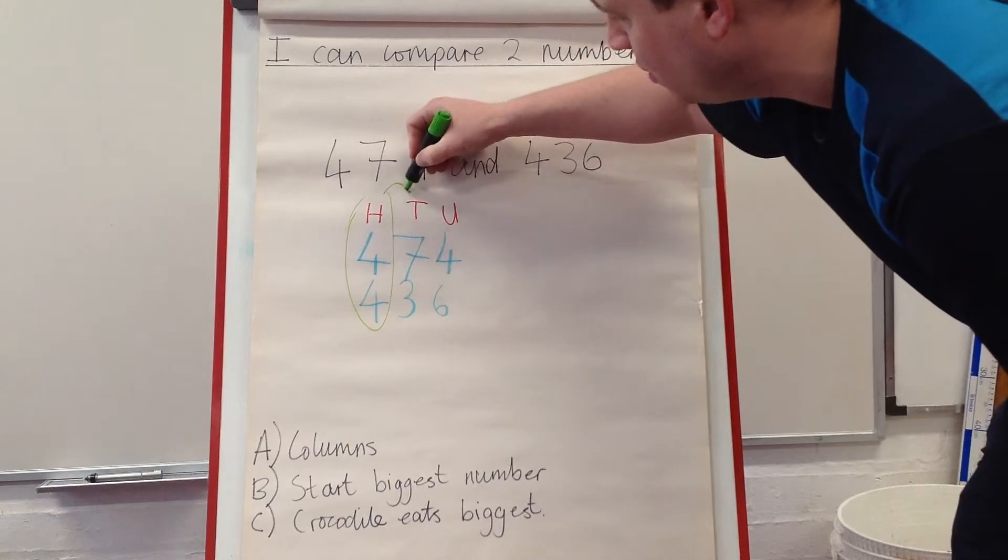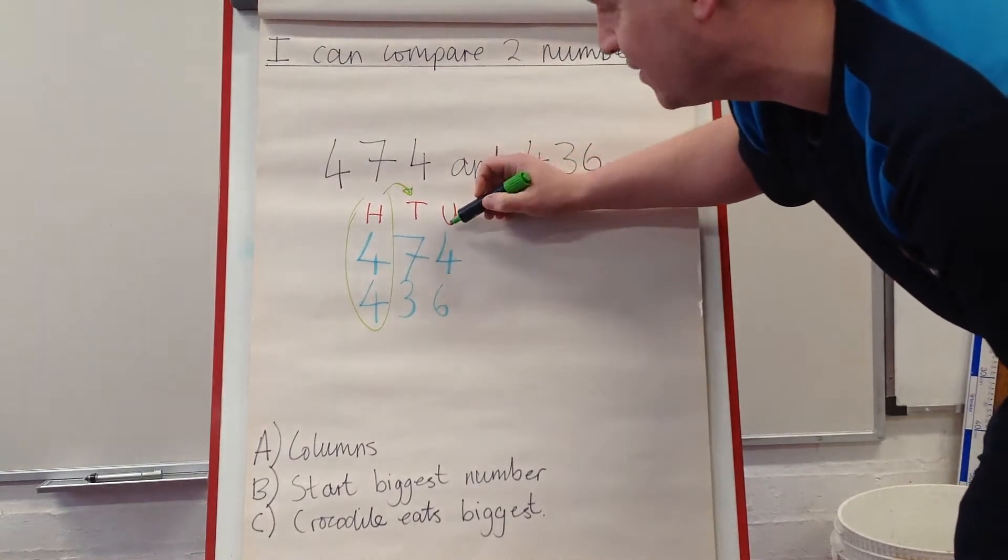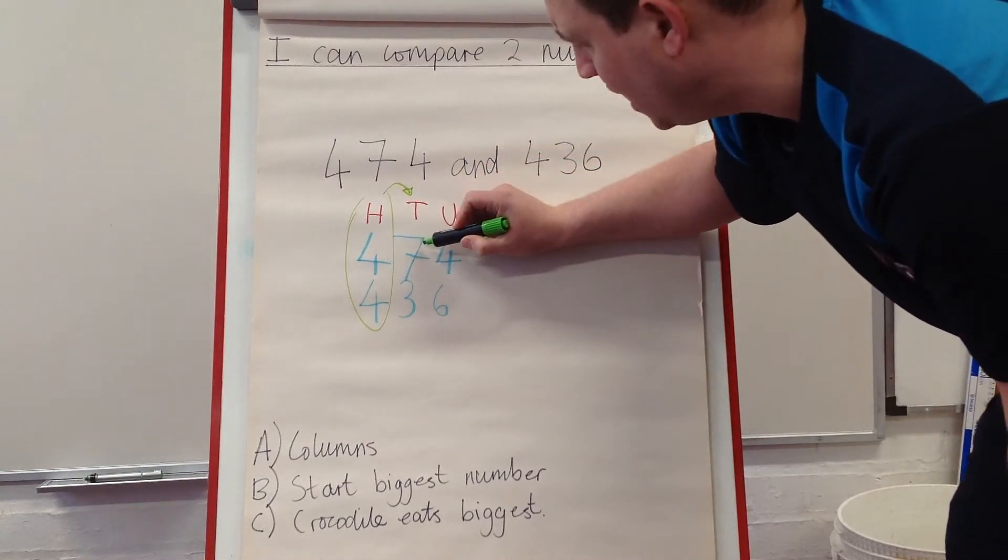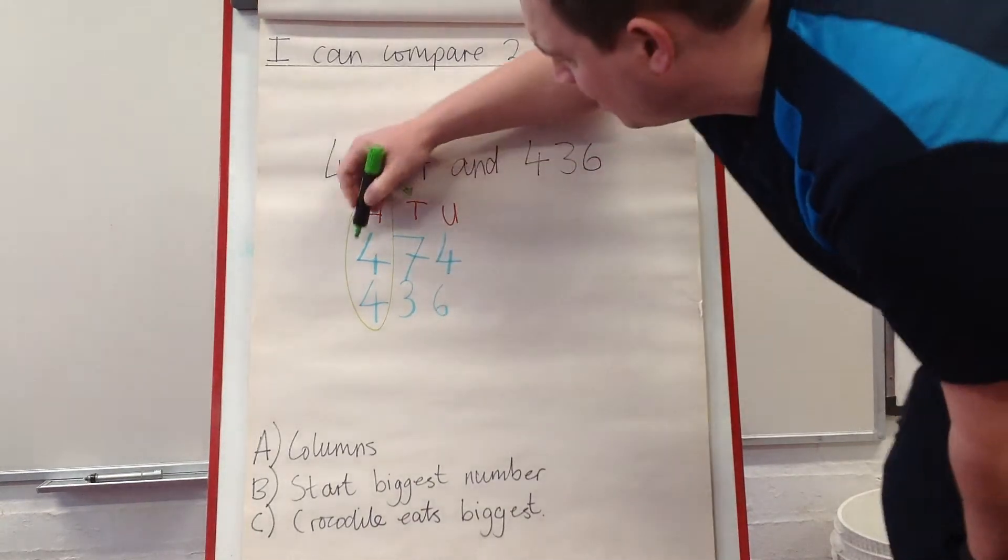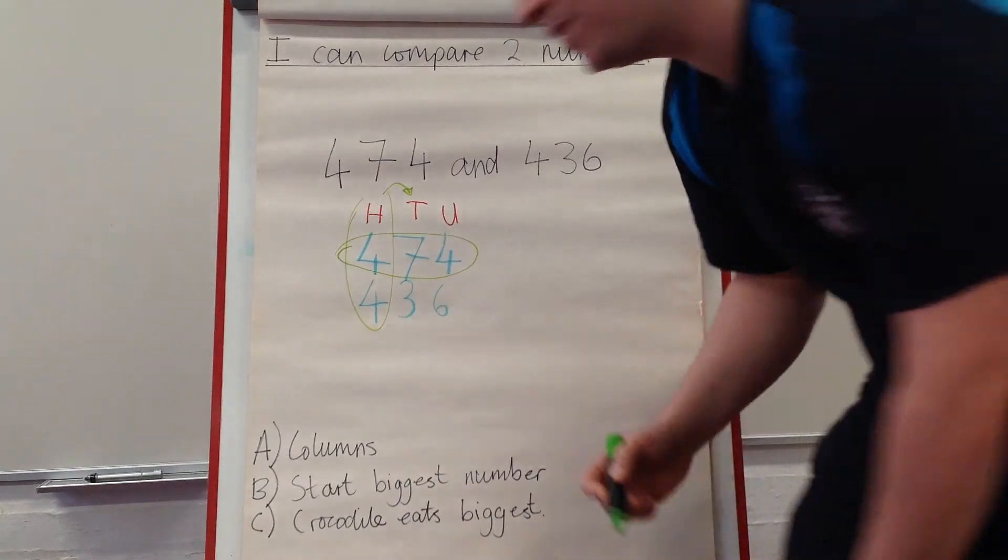So I need to move on to the next column, the tens column. And looking, one's a seven and one's a three. So I know seven's bigger, so this number is the biggest.